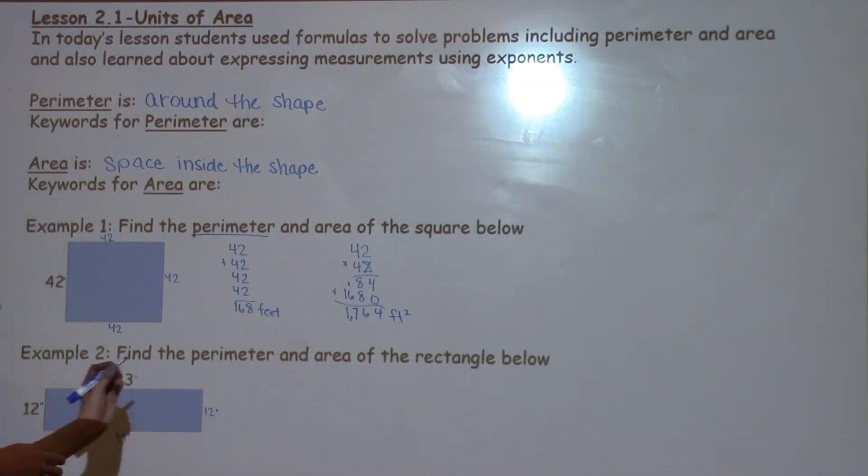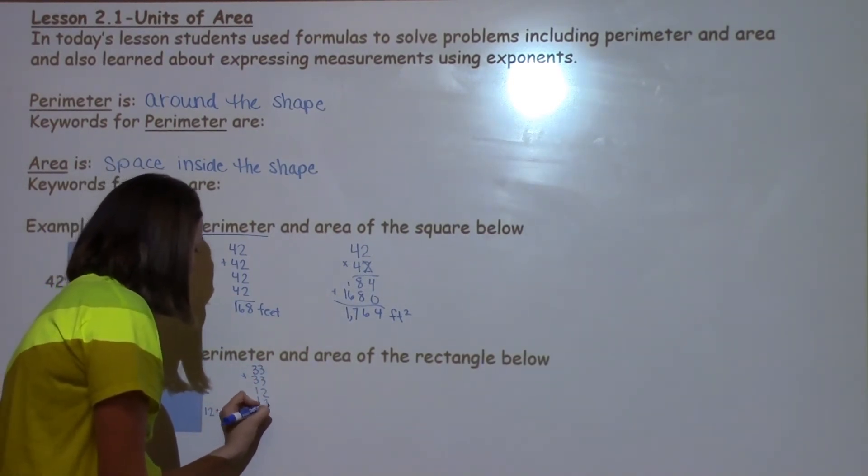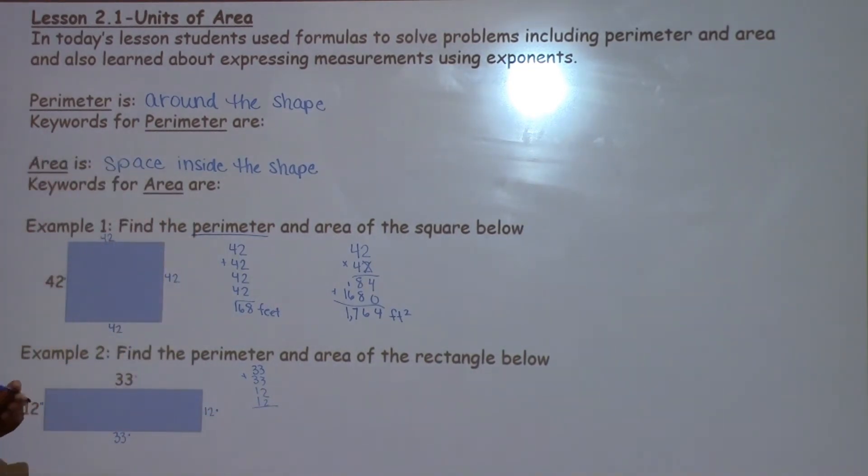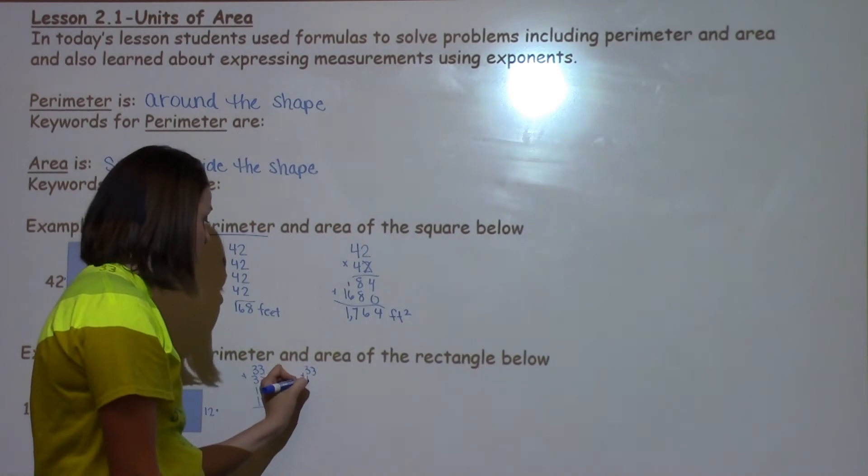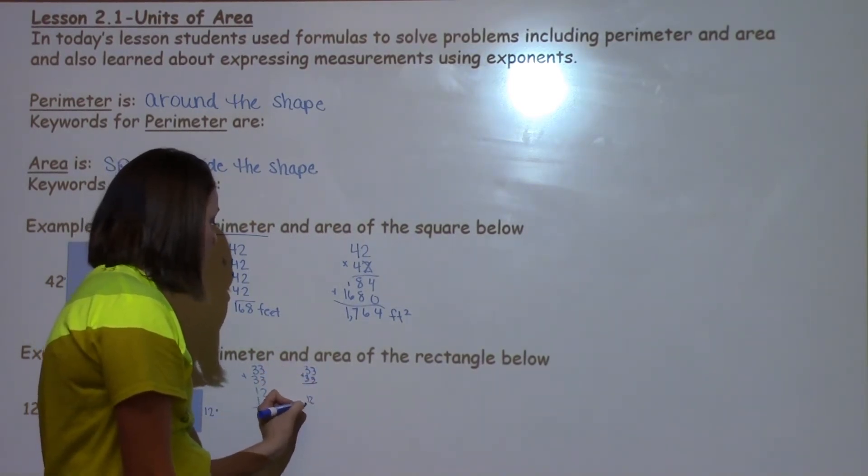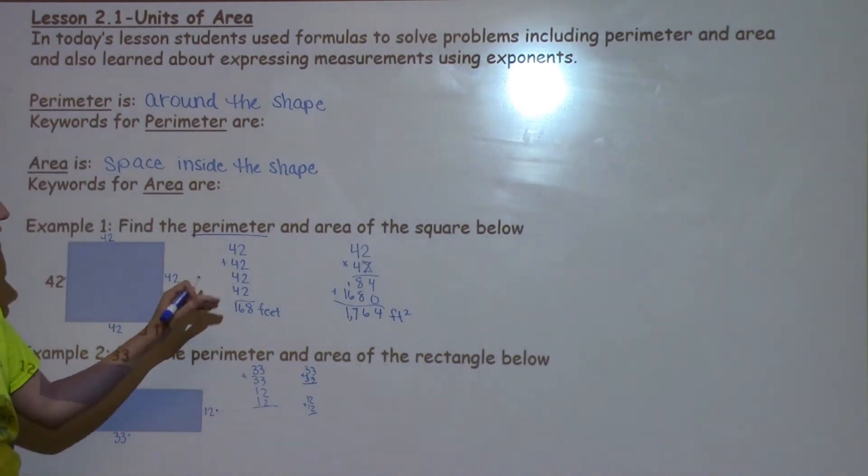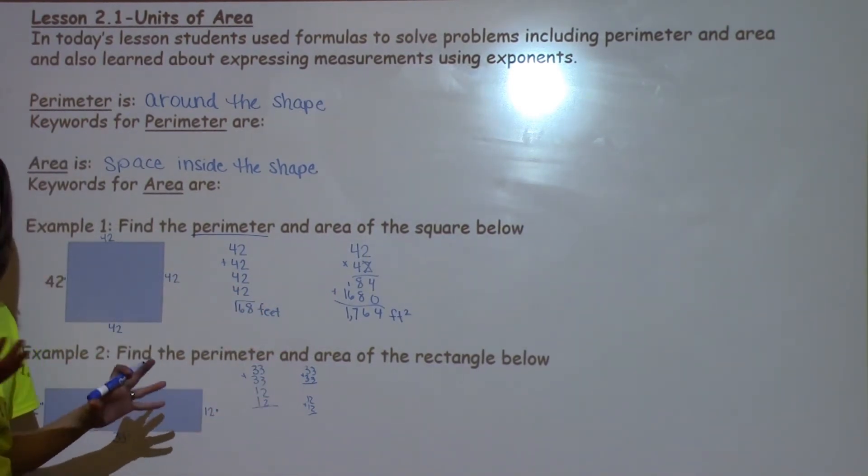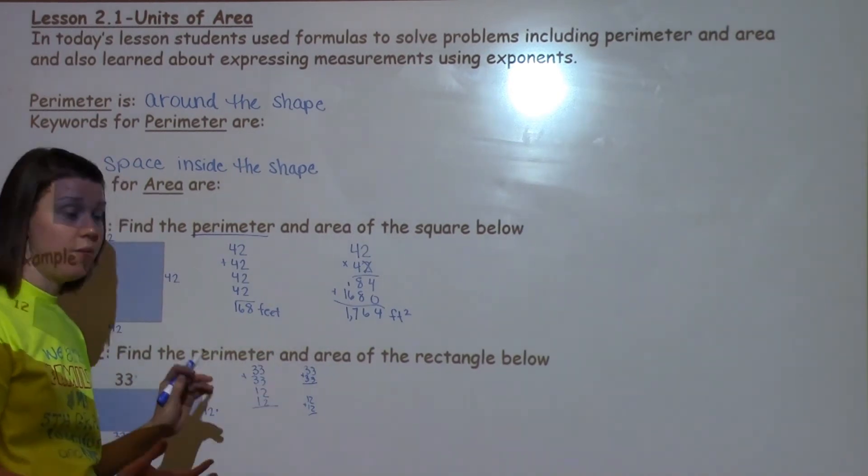Now to find the perimeter, I'm simply going to add. So I have 33 plus 33 plus 12 plus 12. Now some things that students like to do, they like to sometimes just do the 33 plus the 33, and they like to do the 12 and the 12. And they can do that and they can add them all together. Some students prefer just to add all the numbers up. It just kind of depends on what your student likes to do. I'm going to go ahead and do this breakdown of the problem right here.